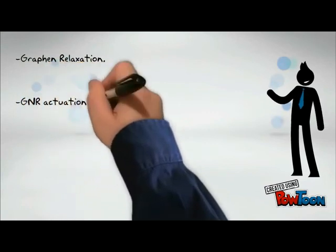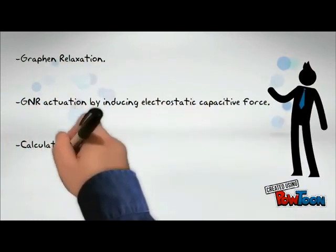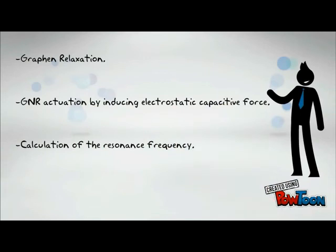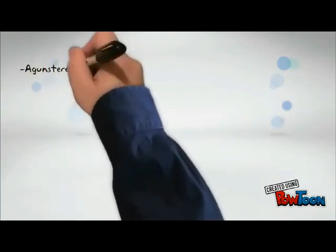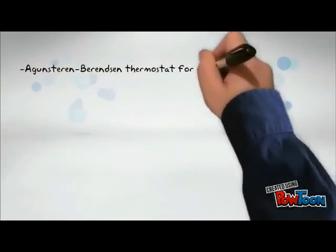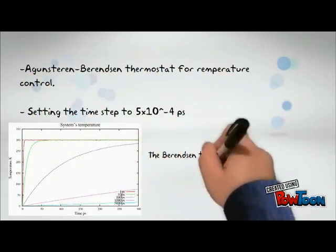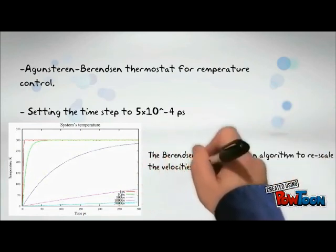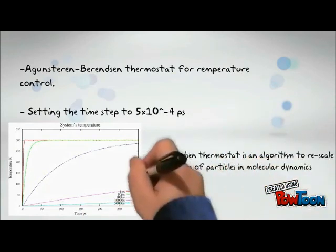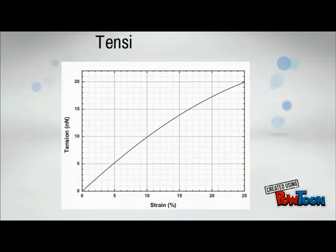Secondly, graphene was relaxed without external force, followed by the actuation of the graphene nanoribbon by applying an external gate force that can be induced by electrostatic capacitive force. Then the resonance frequency of the oscillations were calculated using Fourier transform. Throughout the experiment, the temperature was set to 1 Kelvin and controlled using the Nose-Hoover thermostat. Finally, the simulation step time was set to 5 times 10 to the power of minus 4 picoseconds.